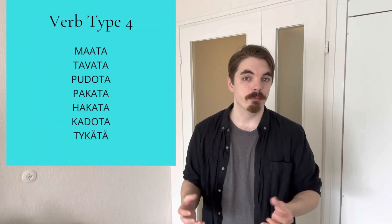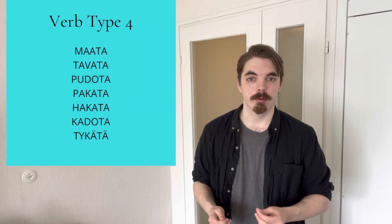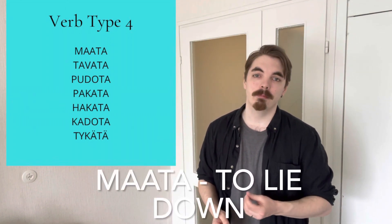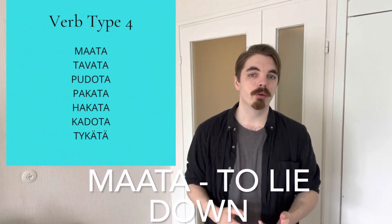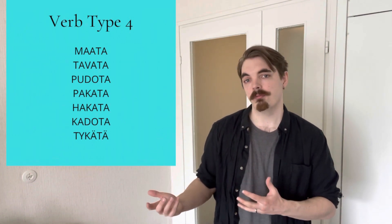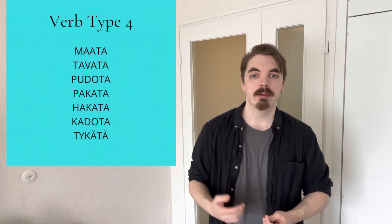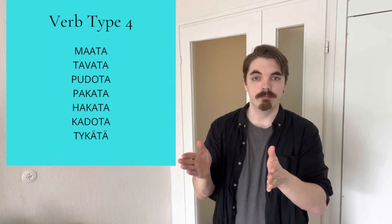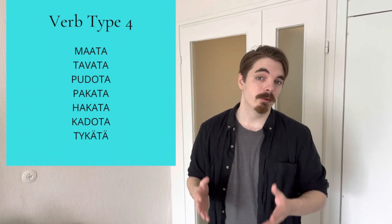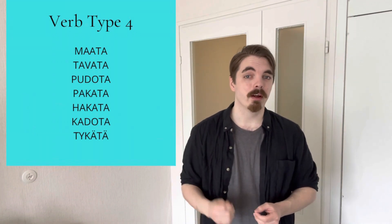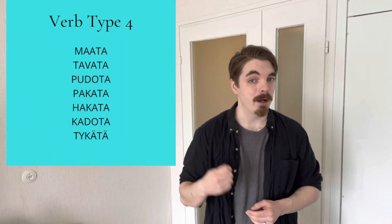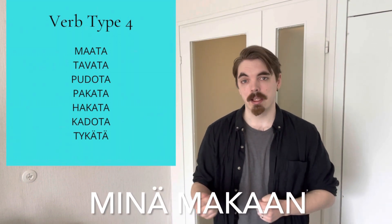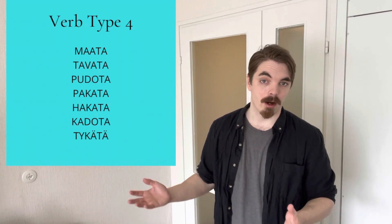Here are some type 4 verbs to practice with. I'll point out that MARATA can be a bit tricky — we add the letter K. So we're doing the opposite of what we'd do with LUKEA, where we take the K out and leave two vowels together. In MARATA, we'd have the letter A three times in a row when we remove the T, so we need to put something there. That's why we add the letter K, and it becomes MAKAAN.